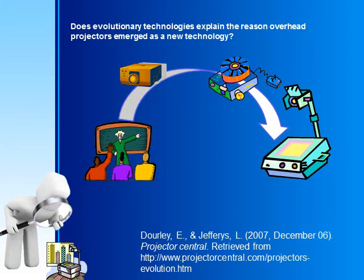Evolutionary technologies is a useful explanation behind the emergence of the overhead projector as a new technology. In the 1950s, new technologies emerged, each following the other with technological advancement.